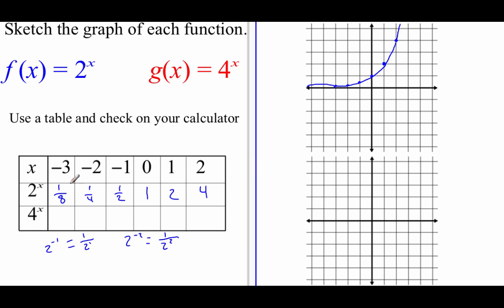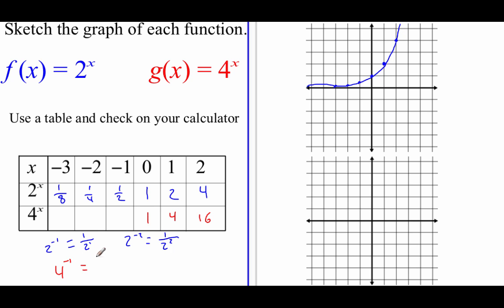Now for the next one, 4 to the x-th power. Again, I'm going to start on the right-hand side. 4 squared is 16. 4 to the first power is just 4. Anything to the 0 power is 1. Now if we treat those negative exponents similarly to what we did with 2 to the x — that negative first power would be 1 fourth, doing something similarly with this negative 2 power we end up with 1 sixteenth, and lastly this negative third power we get 1 over 64.